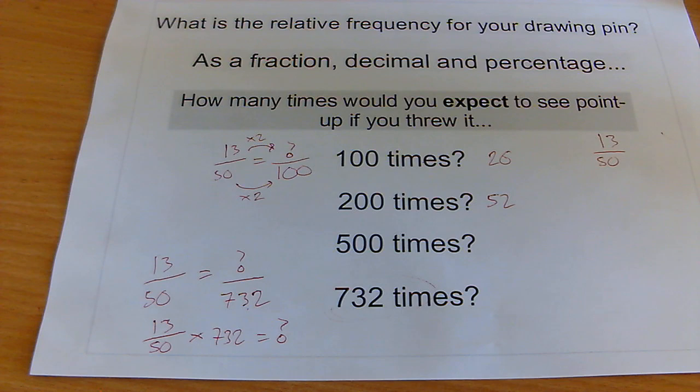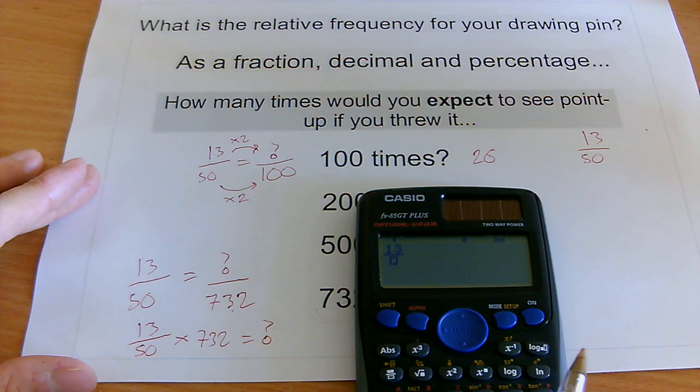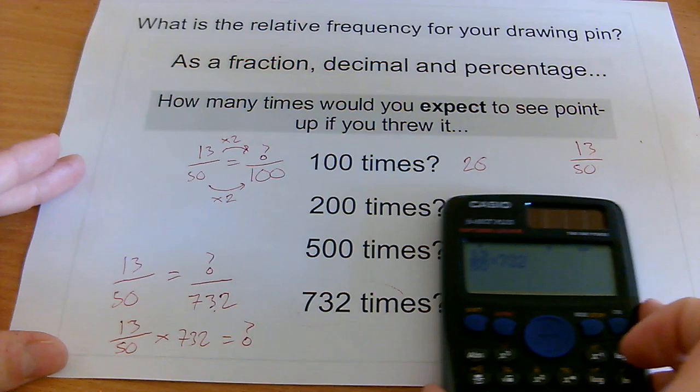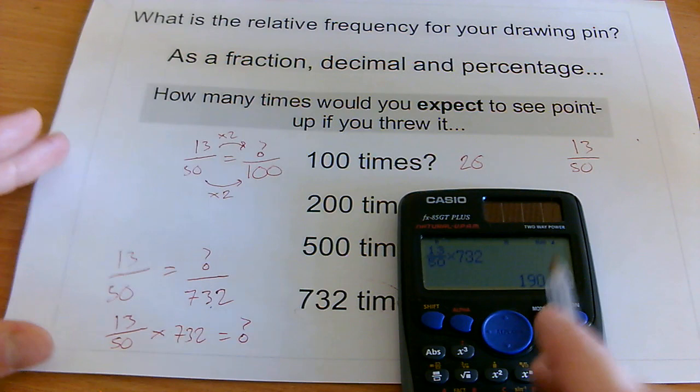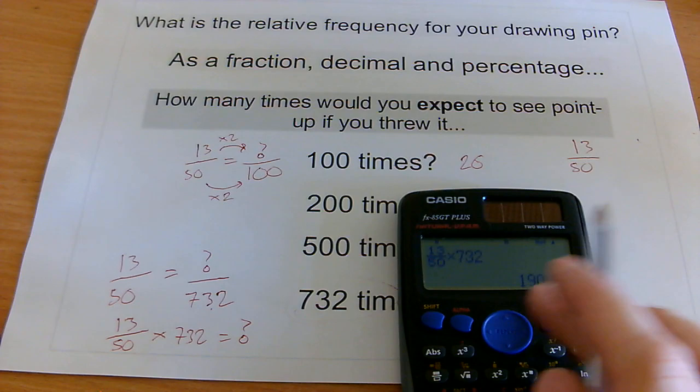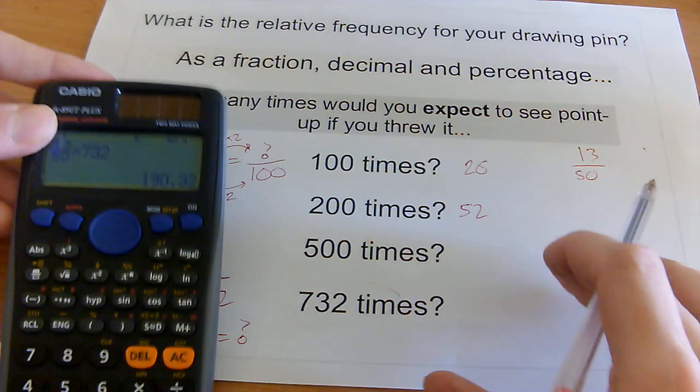Oh, that's a poor quality calculator. This one looks a bit better. So I'll just go 13 over 50 times 732, which is the number of times that I want to know out there from this one. And it says 190.32. So in this case, I'd probably round that off to 192. So I'd expect about 192 times for this drawing pin to land point up.